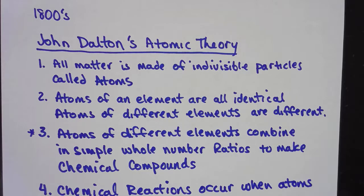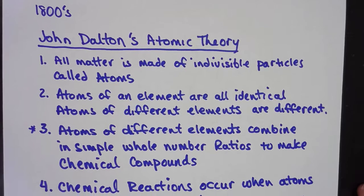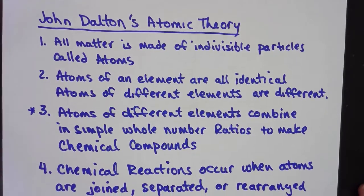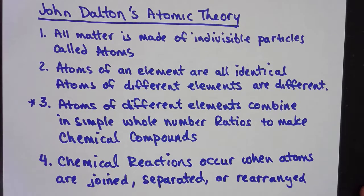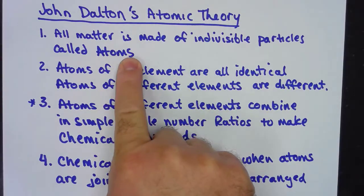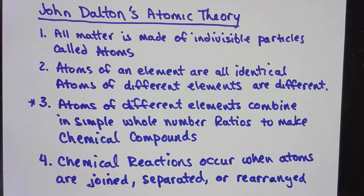Late 1700s, early 1800s, a guy named John Dalton, he was an English school teacher. And he came up with what is now known as Dalton's Atomic Theory. And it has four parts. And the first part says all matter is made of indivisible particles called atoms. Remember, Democritus and Leucippus said atomos, uncuttables, indivisible particles. Atomos has become atoms.